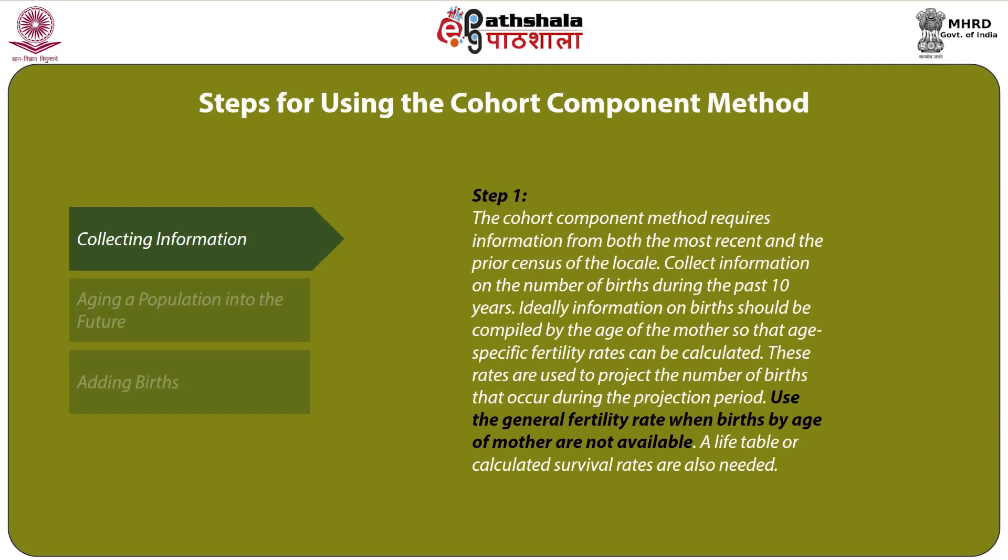Step 1 is collecting the necessary and required information. The cohort component method requires information from both the most recent and the prior census of the locale. Collect information on the number of births during the past 10 years. Ideally, information on births should be compiled by the age of mother so that age-specific fertility rates can be calculated. These rates are used to project the number of births during the projection period. Use the general fertility rate when births by age of mother are not available. A life table or calculated survival rates are also needed.